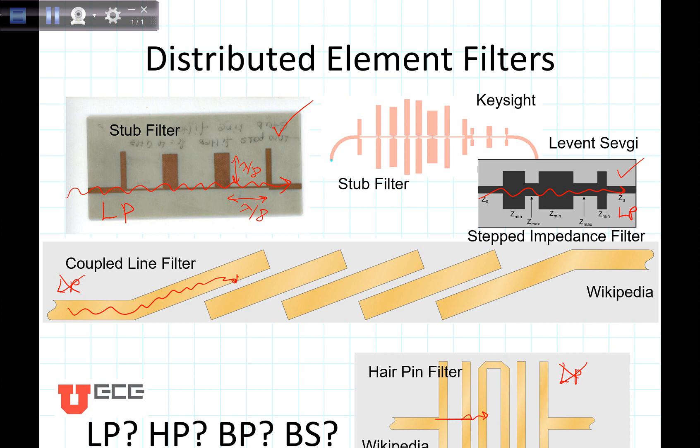Now let's consider high pass. Would I be able to send a high frequency signal through here? Sure, potentially a stub or stepped impedance filter could be used for a high pass design. And you can see that right here on the coupled line filter, sure, this one could be used for a high pass design as well.